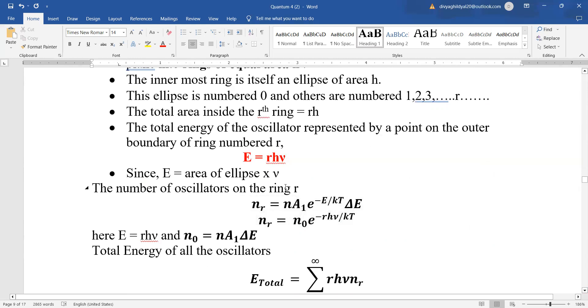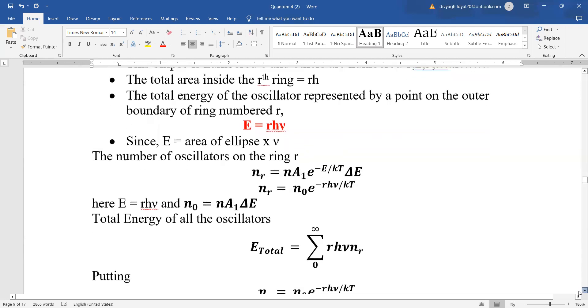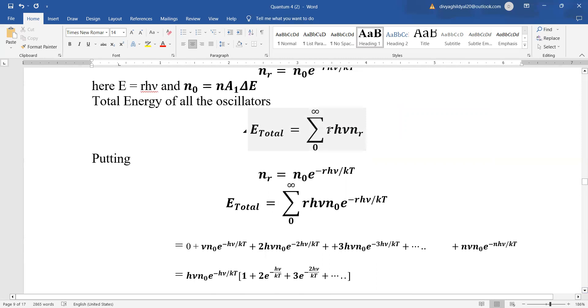So, the number of oscillators on the ring r are n into a1 e to the power of minus e by kT del e where e is rhμ and n0 is n a1 del e. Total energy of the oscillator is equal to sigma 0 to infinity rhμ nr. So, nr is equal to n0 e to the power of minus rhμ by kT. So, total energy we put all these formulas and we get sigma 0 to infinity rhμ and n0 e to the power of minus rhμ by kT.